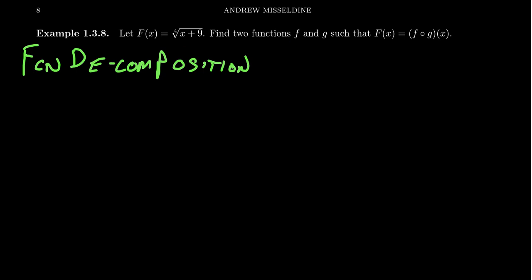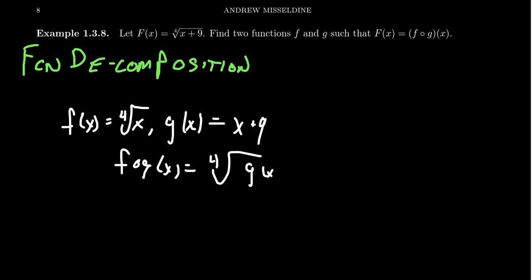So one approach would be the following. We take F of X to be the fourth root of X, and we take G of X as X plus nine. Now notice if we take F composed with G of X, we're going to take the fourth root of X and put G of X inside of it. G of X, of course, is X plus nine. This gives us back capital F. So this, in fact, then works out perfectly here.